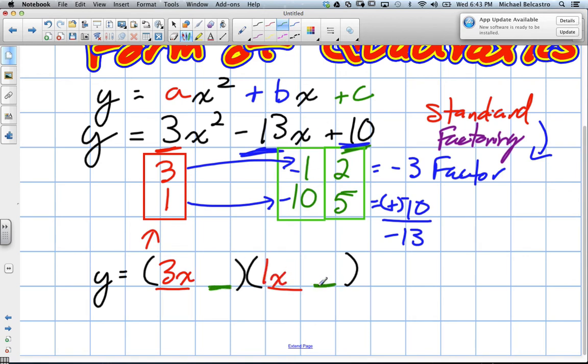Our green numbers will be our second ones. The only thing is we have to make sure, if I multiply 3 by negative 1, the 3 and the negative 1 have to go in opposite brackets. So it has to be negative 1 here.